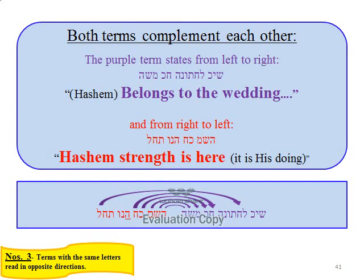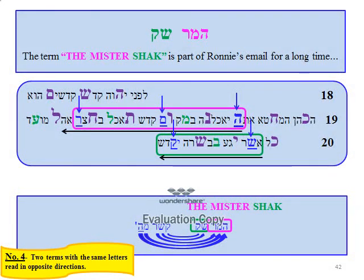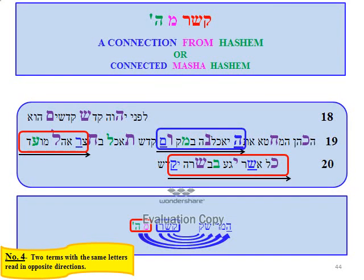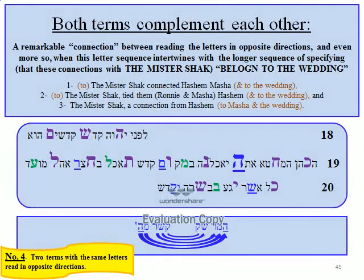The purple term states from left to right: 'Hashem belongs to the wedding,' and from right to left: 'Hashem's strength is here — it is his doing.' The term 'the Mr. Shack' is part of Roni's email for a long time. More importantly, the term 'the Mr. Shack' is very prominent within the term 'belongs to the wedding.' When we read 'the Mr. Shack' in the opposite direction we get: 'a connection from Hashem,' or 'connected Masha Hashem.' Hashem connected both Masha and Roni. A remarkable connection between reading the letters in opposite directions, and even more so when this letter sequence intertwines with the longer sequence specifying that these connections with Mr. Shack belong to the wedding.